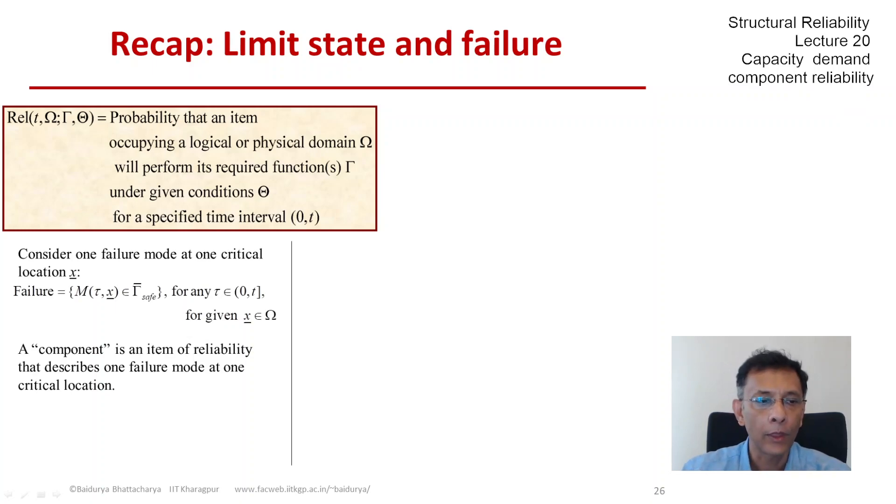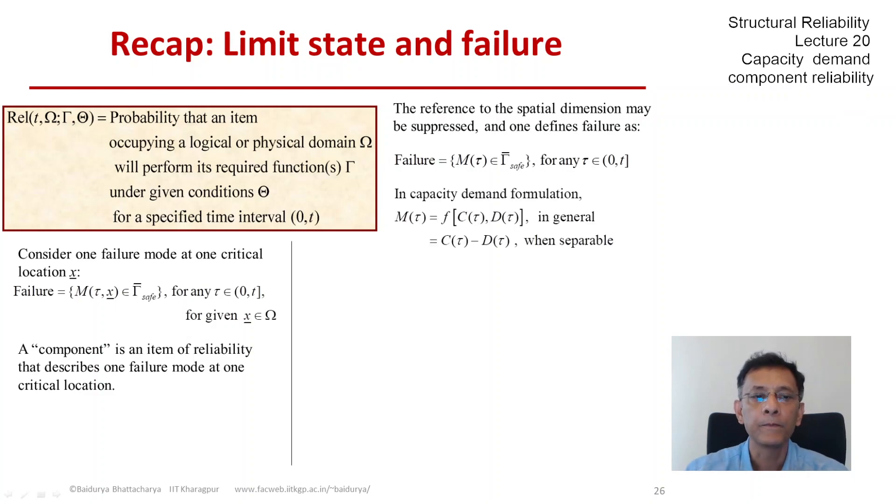And we therefore suppress the reference to X and we look at the safety margin M as a function of time. And in general this safety margin is a function of capacity type and demand type random variables.